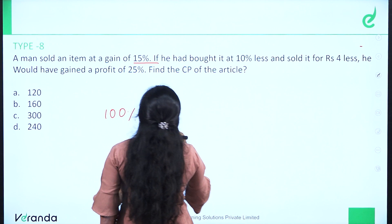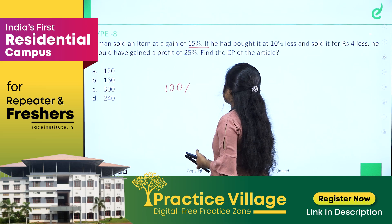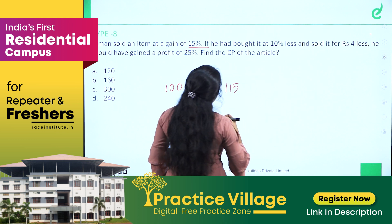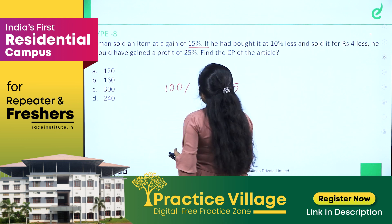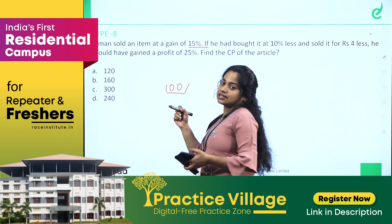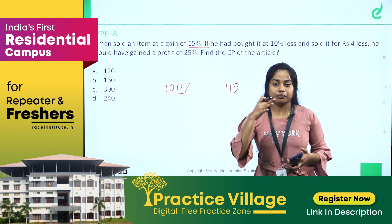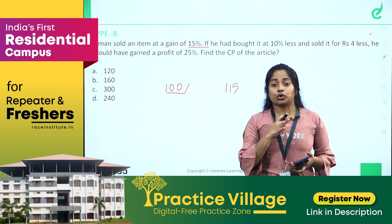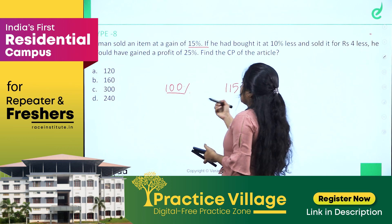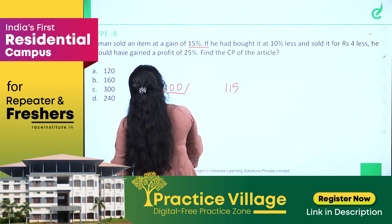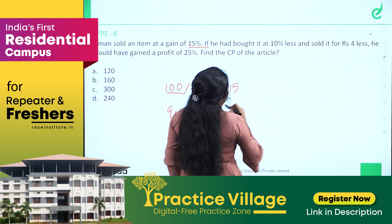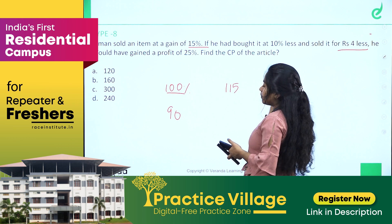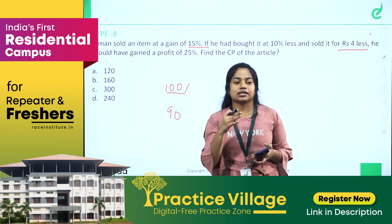How much more would you be able to gain at 10%? If he had bought it at 10% less, he would need to raise the price by 10% of his cost. It would be sold for 70% of the original price.